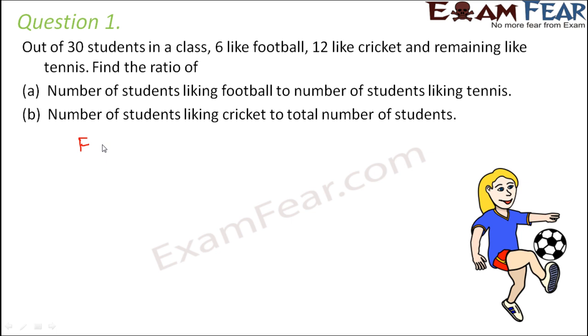So how many like football? 6 like football. 12 like cricket and how many like tennis? Tennis is remaining. So remaining would be how much? So total student is 30. So from 30, you subtract all those who like football and cricket. So this would be 30 minus 18, which is 12. So 12 like tennis.